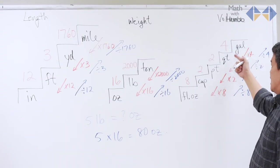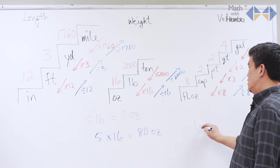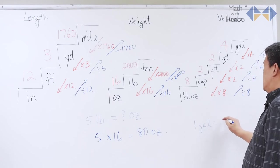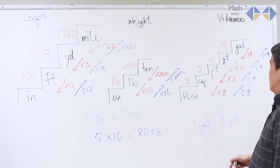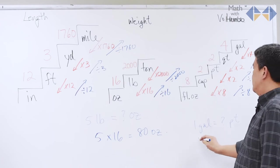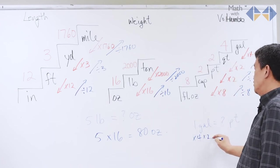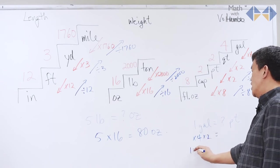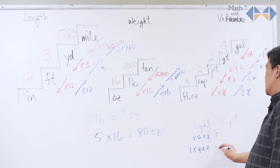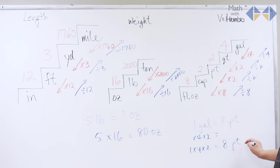If you have a gallon, how many pints have you got? Well, multiply by 4. And then quart to pint, multiply by 2. So, essentially, 1 times 4 times 2 gives you 8 pints.